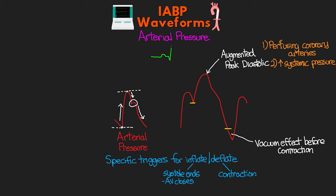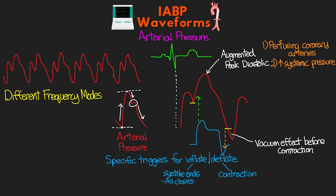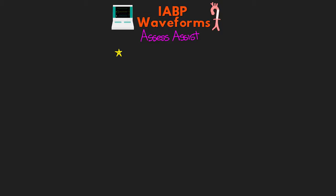Just like with a regular arterial pressure waveform, it's going to follow after the QRS on the ECG. The balloon pressure lines up with the increases and decreases we see on the arterial waveform. If the balloon pump is assisting with every beat, we see a consistent pattern. We do have different modes where we can adjust the frequency — assisting every beat, every other beat, or every third beat. These modes are primarily used when weaning the balloon pump, which I'll talk about in a future lesson.